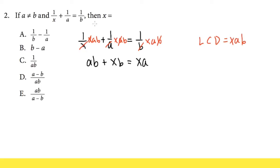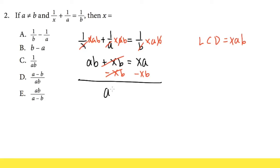Now we still have to solve for x. We see that x is on both sides, so we are going to collect all the x terms together and put everything else onto the other side. From the left-hand side, a·b has no x, and x·b has x. So let me subtract x·b from both sides — all the x's will be on the right-hand side. We end up with ab is equal to x·a minus x·b.